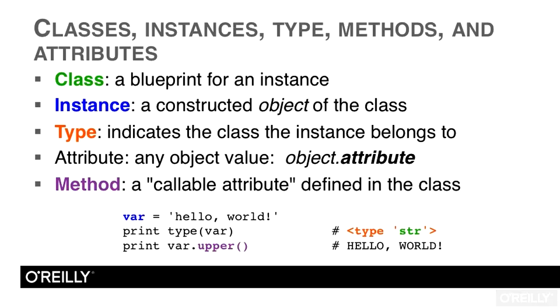A method is really a function defined in the class that can be used by the instance. So look at the example below. What type of object is var? It's a string. So we can say that it is of the string class and that it is of type string. We can also call it a string object or a string instance. And on the last line, we can say that we're calling upper method on the string object or instance.